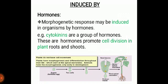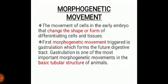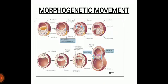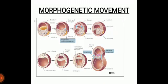Animals have morphogenesis only in the early development. The movement of cells in the early embryo changes the shape and form of differentiating cells and tissue. The first morphogenesis movement triggered is gastrulation, which forms the future digestive tract. Gastrulation is the most important morphogenesis movement, forming the basic tubular structure of animals. In the diagram, you can see how the blastula converts into the gastrula after cell orientation or movement, and through invagination it forms a double-layer cup-like structure.